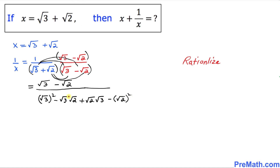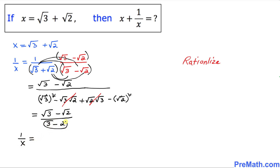The middle terms cancel out since they are the same quantities with opposite signs. We're left with square root of 3 squared minus square root of 2 squared, which is 3 minus 2, giving us 1 on the bottom. So 1 over x turns out to be simply square root of 3 minus square root of 2.